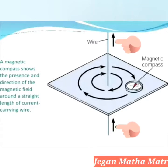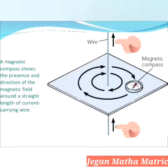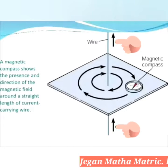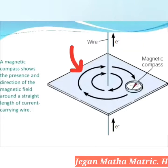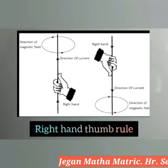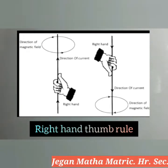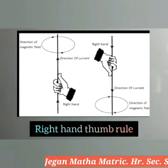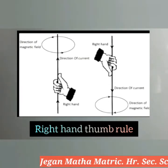Here we have taken the long straight wire which carries current and can produce a magnetic field in the shape of concentric circles around it. The second topic is the right-hand thumb rule, which is used to find the direction of the magnetic field around a current-carrying conductor.